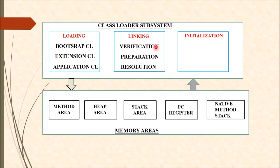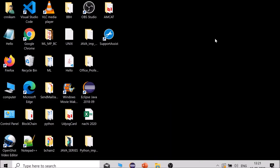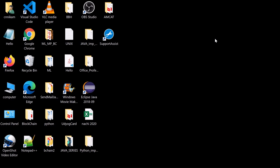That was all the memory areas for this video. To summarize: method area, heap area, and stack area are very important from a programmer's point of view, while PC register and native method stack are more internally used and not as important from a programmer's perspective. If you like this video please like and subscribe to our channel. In the next video I will explain the execution engine of the JVM architecture. Thanks for watching.